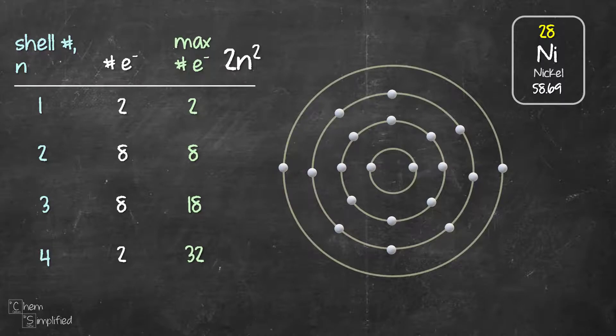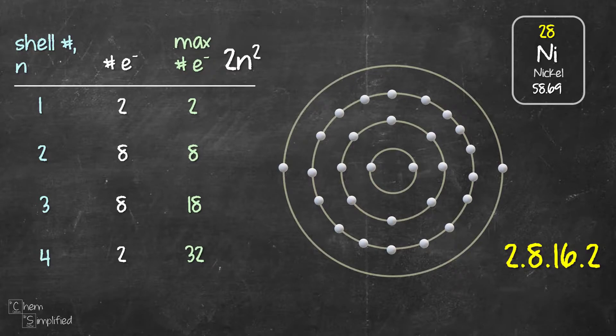the remaining 8 electrons are going to go back to shell 3, making shell 3 to have a total of 16 electrons. The electron configuration for nickel is therefore 2.8.16.2.